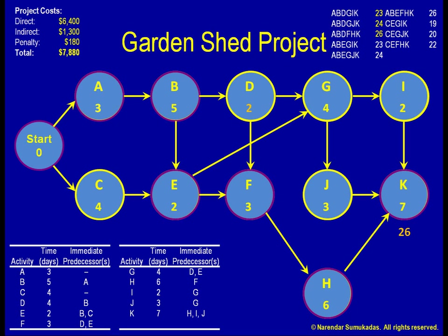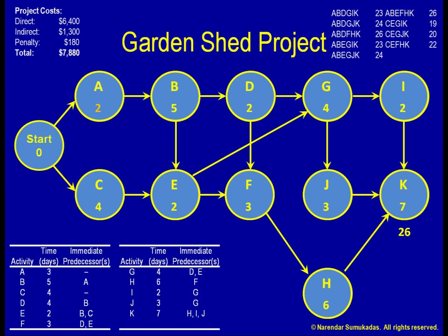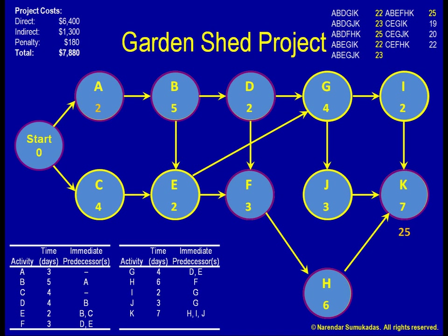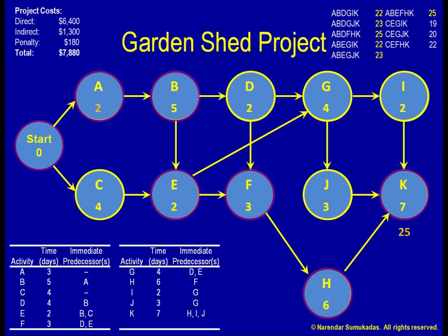Looking to crash further, an easy way to crash both paths is to crash an activity that is common to both. Activities A, B, F, H, and K fit the bill. Of these, A is the cheapest, so let me crash that by one day. Bringing A down to two days cuts down a number of my paths, including the critical paths A, B, D, F, H, K and A, B, E, F, H, K, each one now at 25 days.